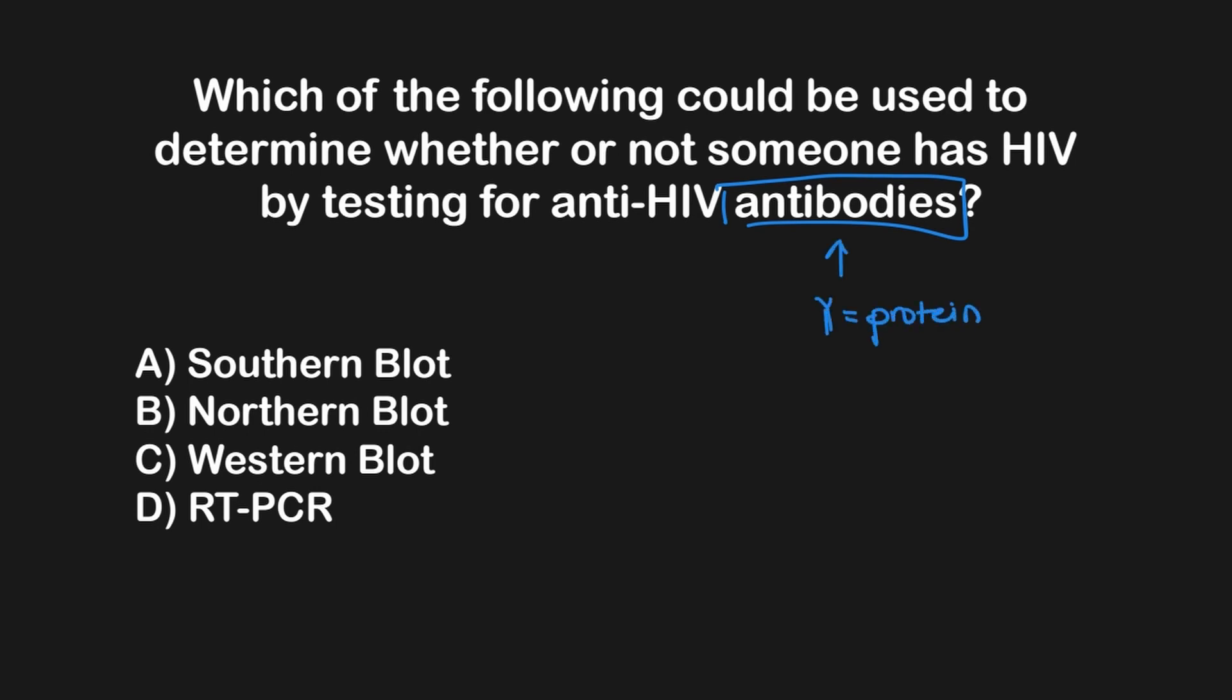To answer this question, we need to first determine what it is that we are measuring. In this case, it is anti-HIV antibodies. Antibodies are proteins, so we will need a technique that can identify proteins. Using SNOWDROP, we can see that the western blot corresponds with proteins, making C the correct answer here.